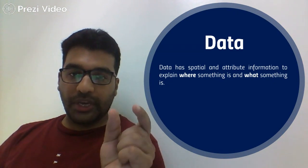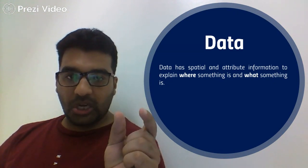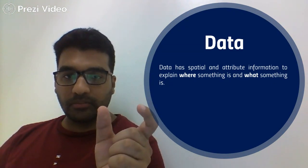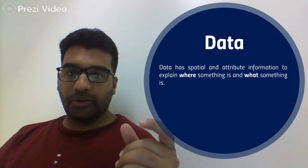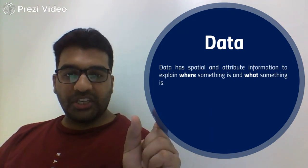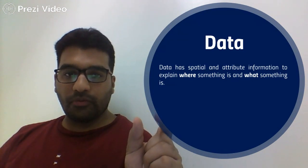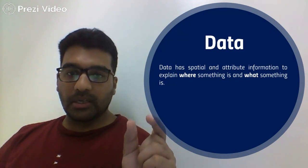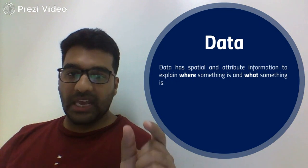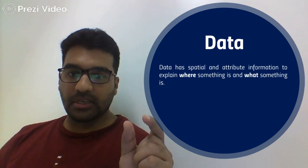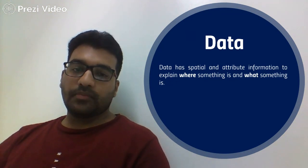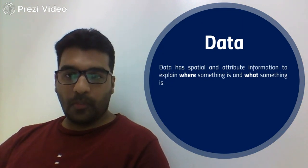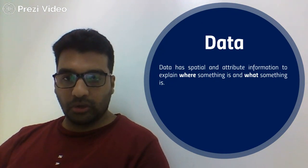So data has two parts: its spatial component and its attribute component. For example, a building's location is its spatial component, while the name of the building and any other related information is the attribute information. The location information answers the question of 'where,' and the other information — name and related details — answers the question of 'what.' Thank you very much for watching this short video. Allahafis.